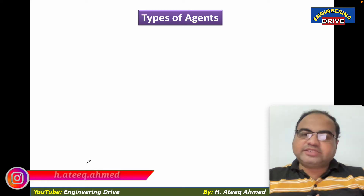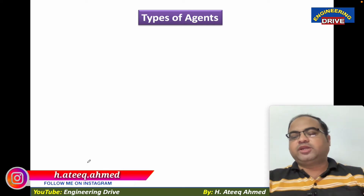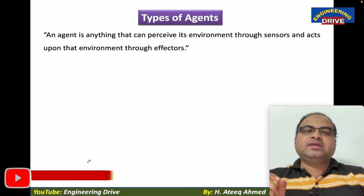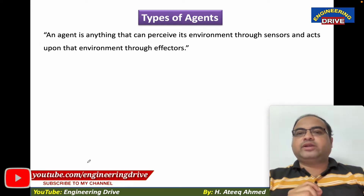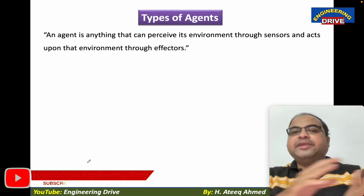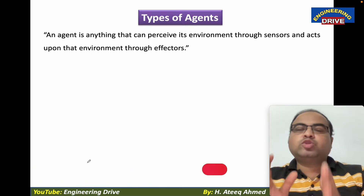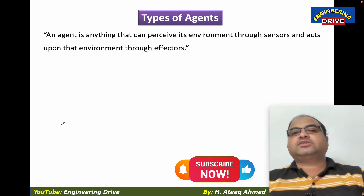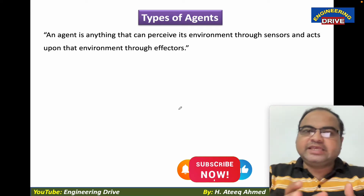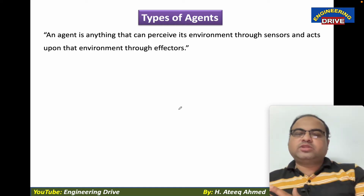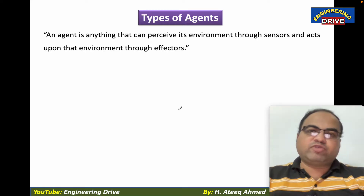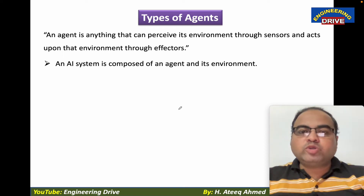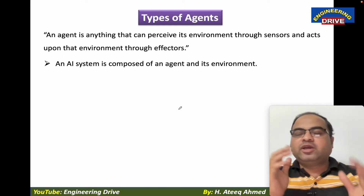What is an agent? An agent is anything that can perceive its environment — perceiving meaning taking input from the environment through sensors and acting upon that environment through effectors. So an agent is anything which will take input from the environment and based on that input it will generate action on that environment. An AI system is composed of an agent and its environment.